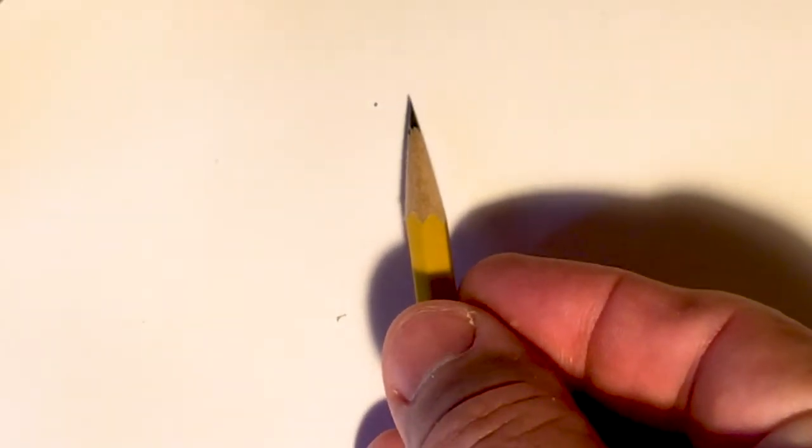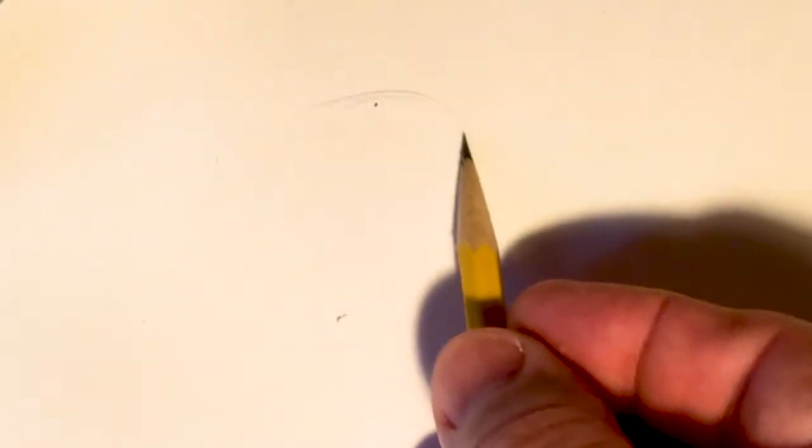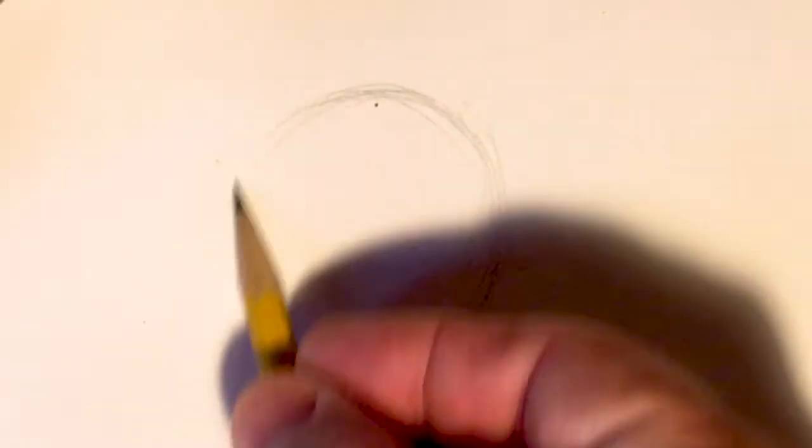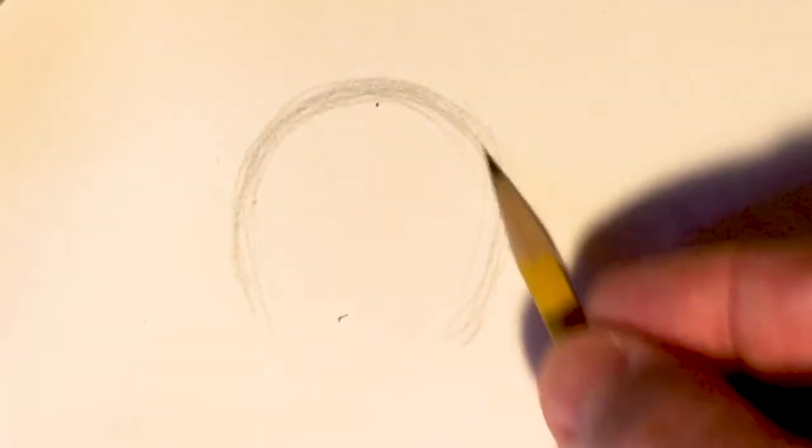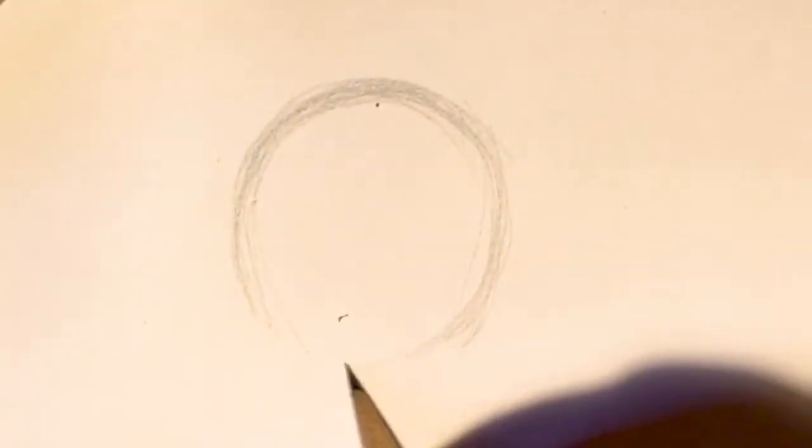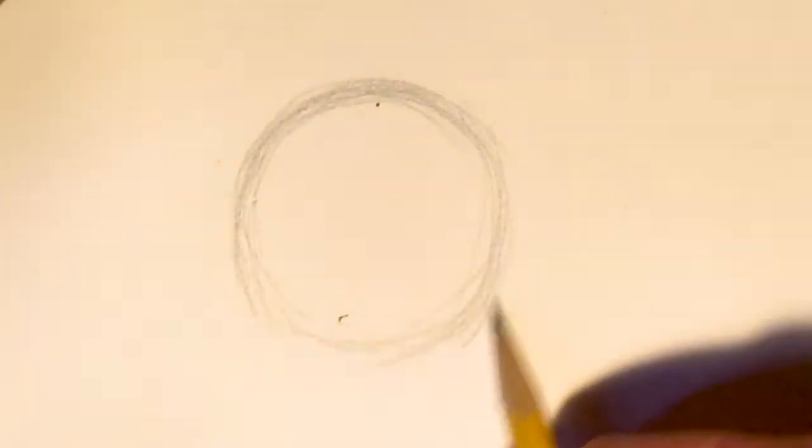All right everybody, it's time to draw Schroeder. Step number one: in the middle of your paper, very lightly sketch in a circle that's about as big as an orange. Now here's the step you really want to take your time on. If you look at what I'm doing here, I'm not writing the letter O. I'm building a circle. And to do this, all I'm doing is sketching in curves which I'm then blending into each other to build the shape. Think of this as sculpting.